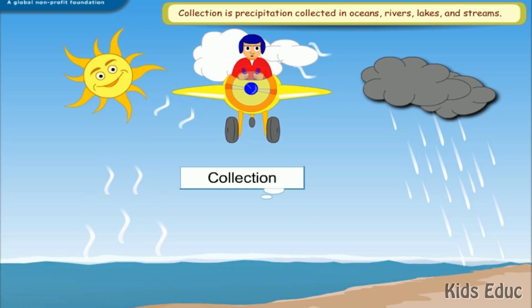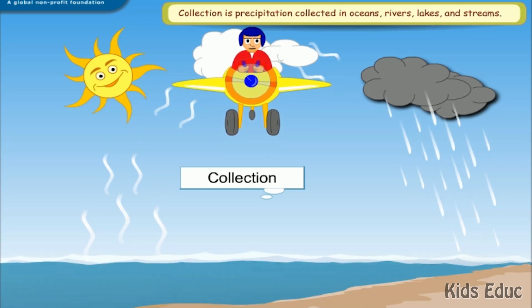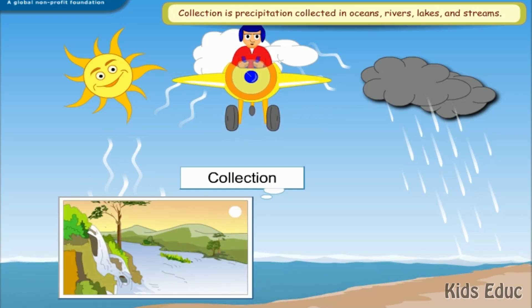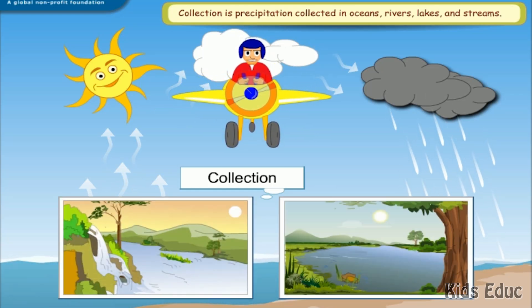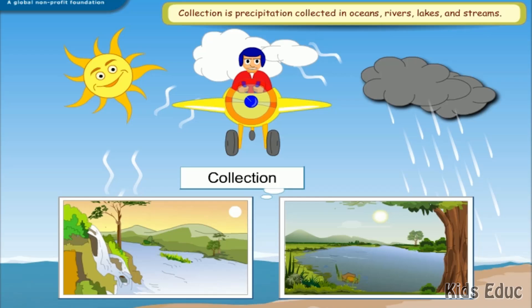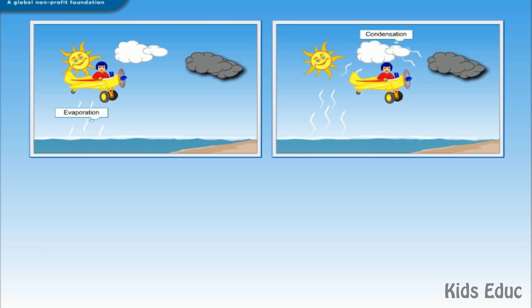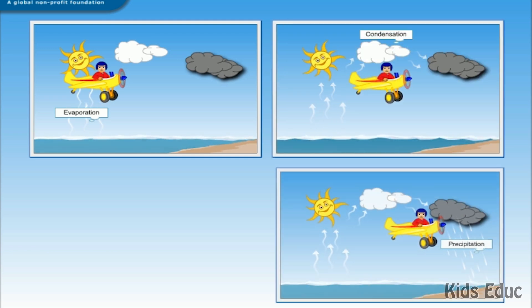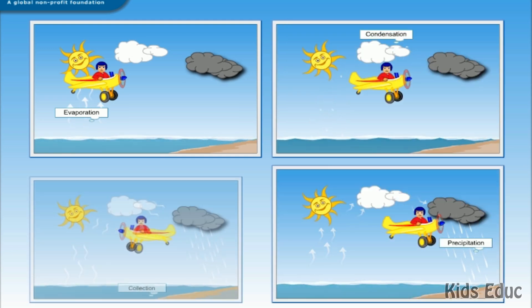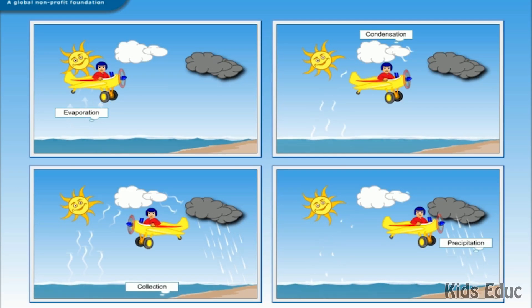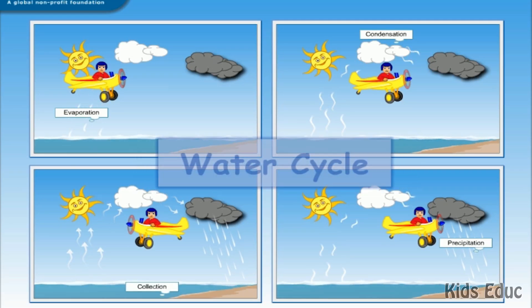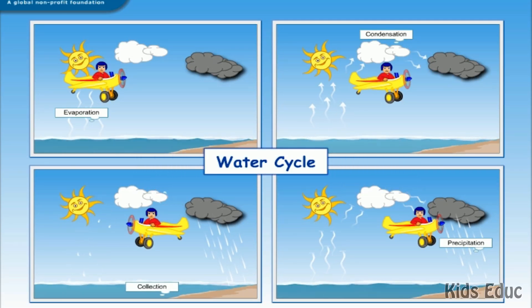Collection is precipitation collected in oceans, rivers, lakes, and streams. Evaporation, condensation, precipitation, and collection together form the water cycle.